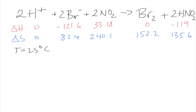So here we have a reaction and we want to find the change in Gibbs free energy. We're given the change in enthalpy of formation and entropy of formation, so let's use the formula I just gave you. We also know that temperature is 25 degrees Celsius. Let's start with our enthalpy — the change in enthalpy of formation for the system.